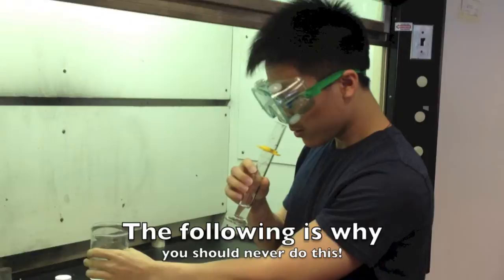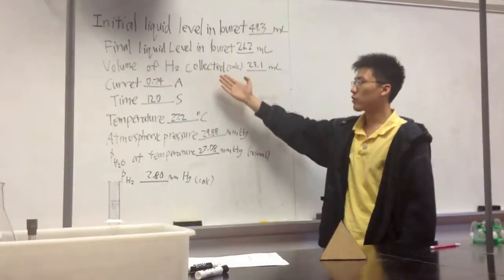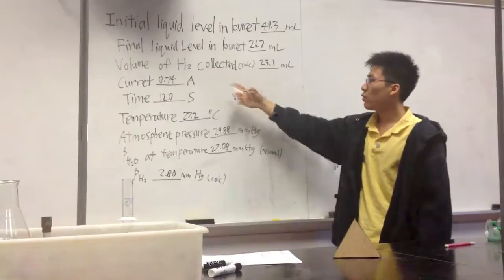Alright, here are the results. Here we have the initial liquid level which you measure before you do the experiment, and here we have the final liquid level which we measure after we do the experiment. This is going well so far. Here we have the volume of H2 collected and it's the final liquid level subtracted from the initial liquid level.